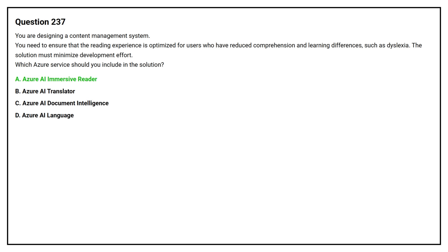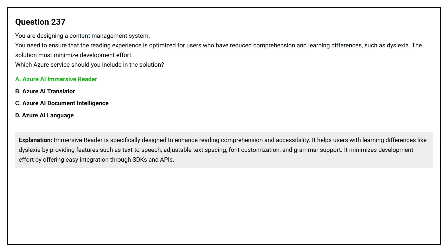The correct answer is option A, Azure AI Immersive Reader. It is specifically designed to enhance reading comprehension and accessibility. It helps users with learning differences like dyslexia by providing features such as text-to-speech, adjustable text spacing, font customization, and grammar support. It minimizes development effort by offering easy integration through SDKs and APIs.